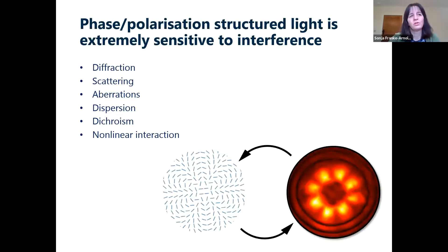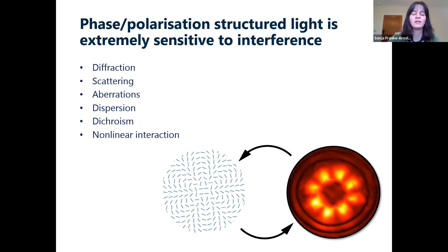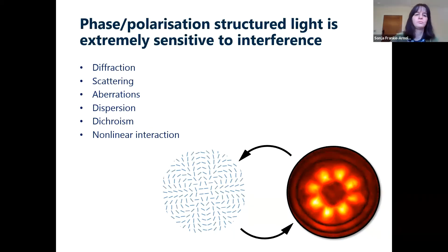Phase and polarization structure is important in all situations involving interference. Interference in its widest sense is responsible for a lot in optics: diffraction through an aperture, scattering, aberrations, dispersion, dichroism, and nonlinear interactions all depend on something akin to interference effects. Phase differences between parts of the beam turn into intensity differences, and polarization-structured light shows far more interference structure than homogeneously polarized light.